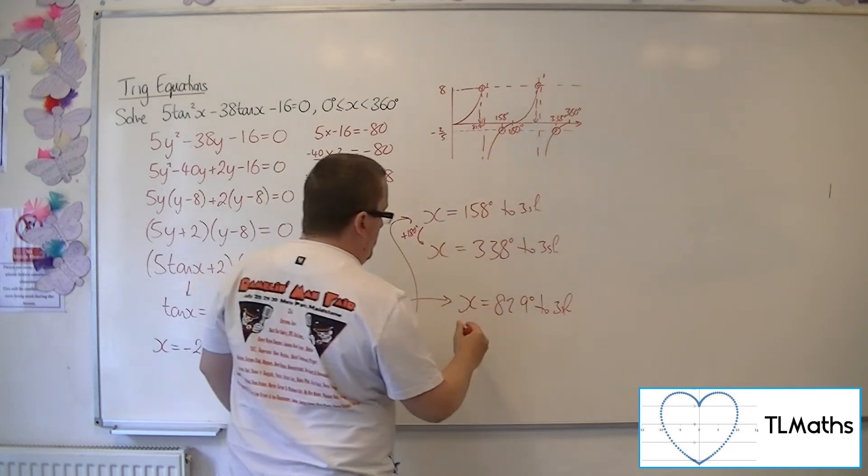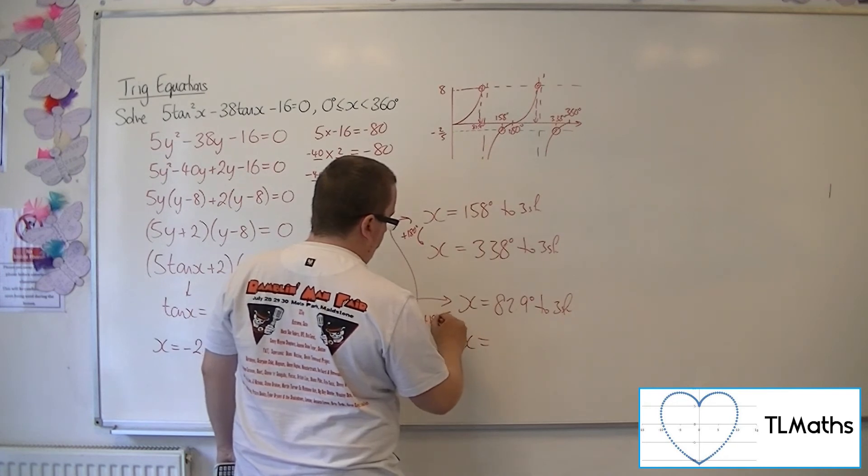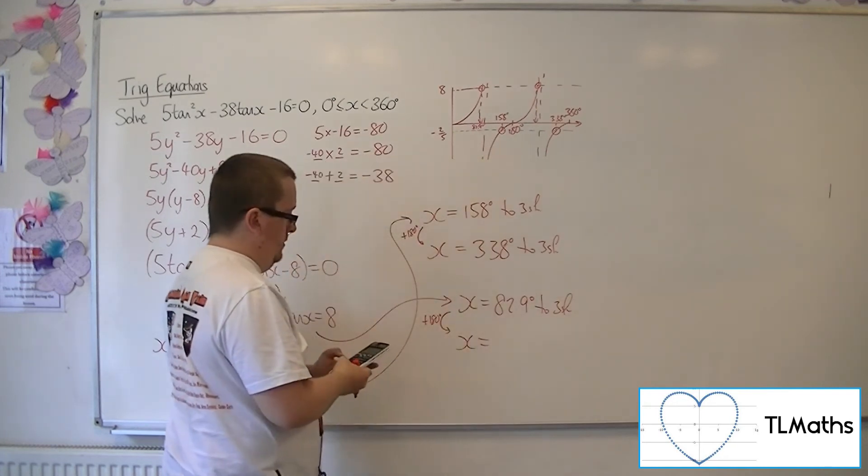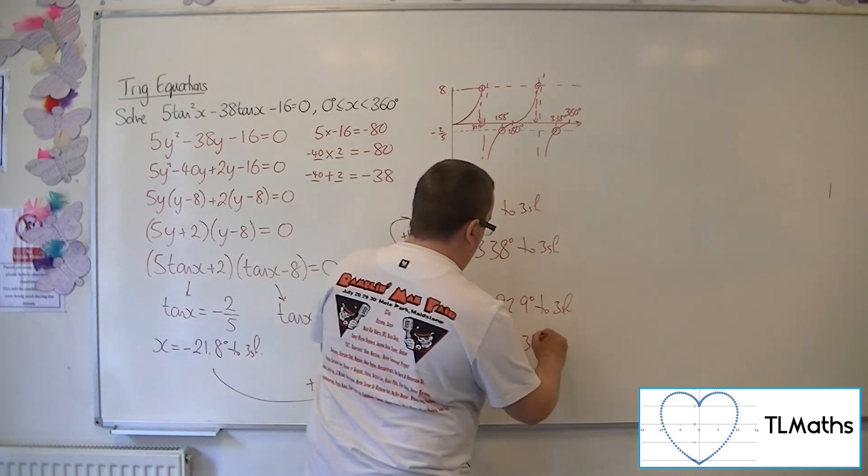And then add on 180 onto that to get this second solution. So add on 180, and I get 263 to 3 sig fig.